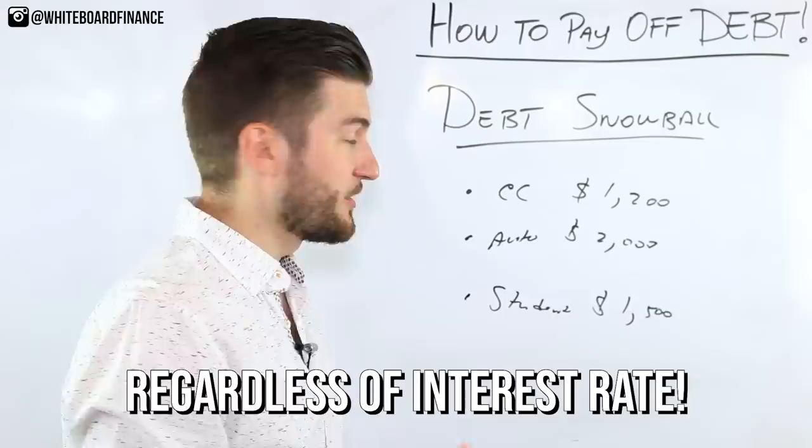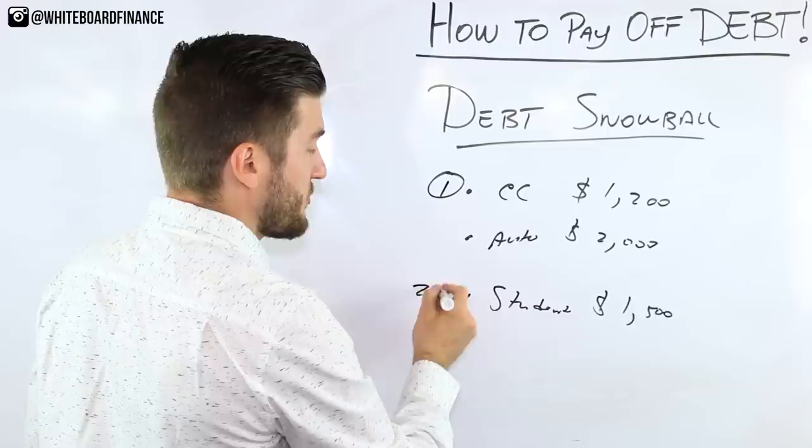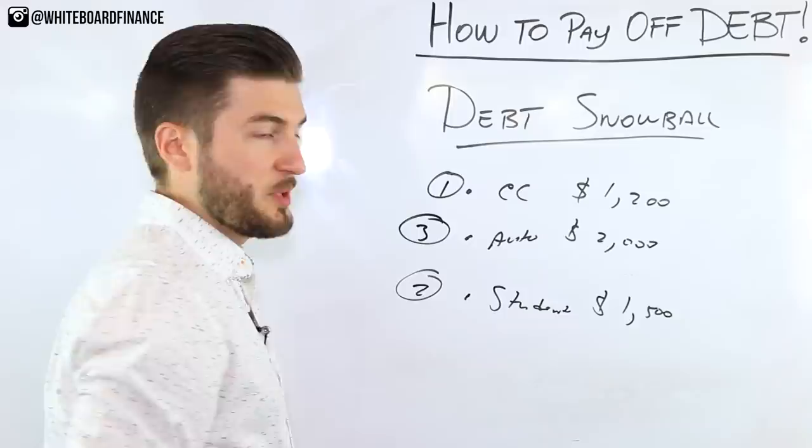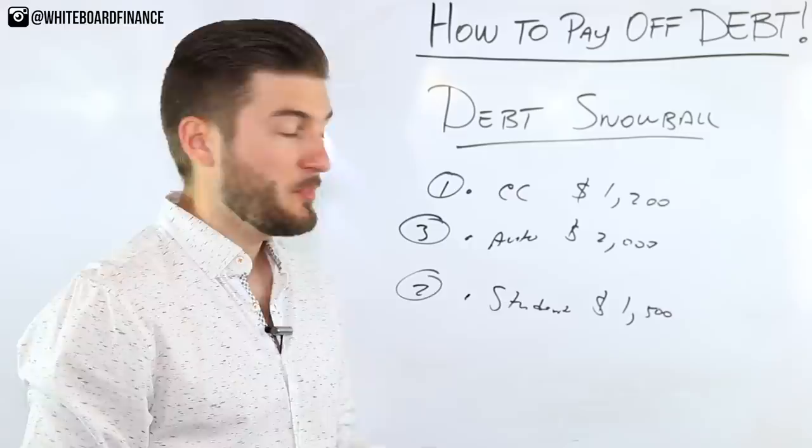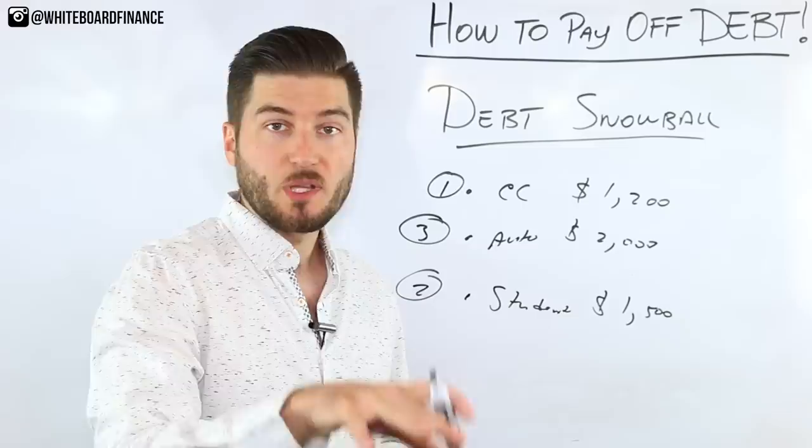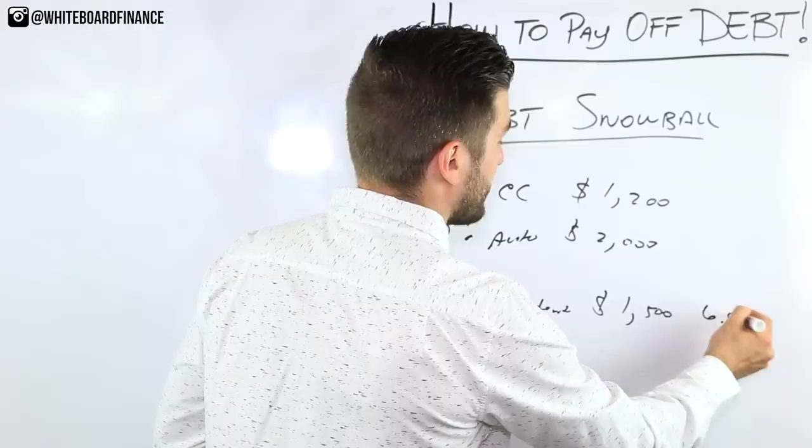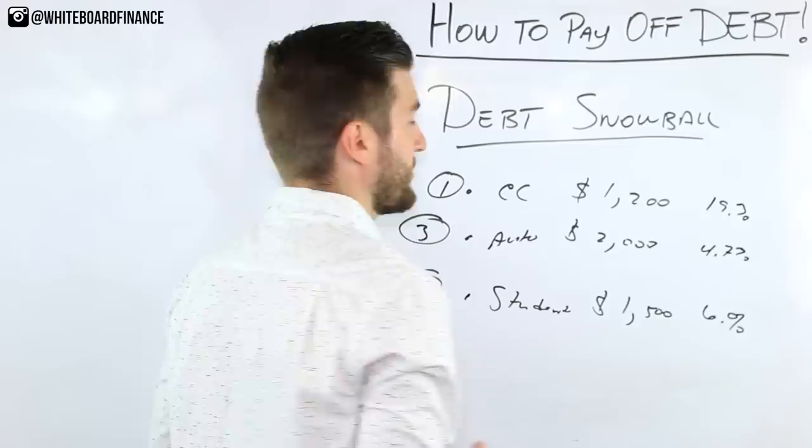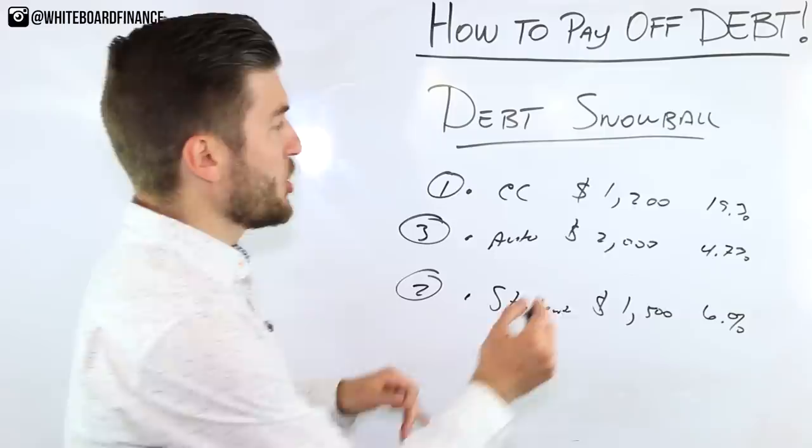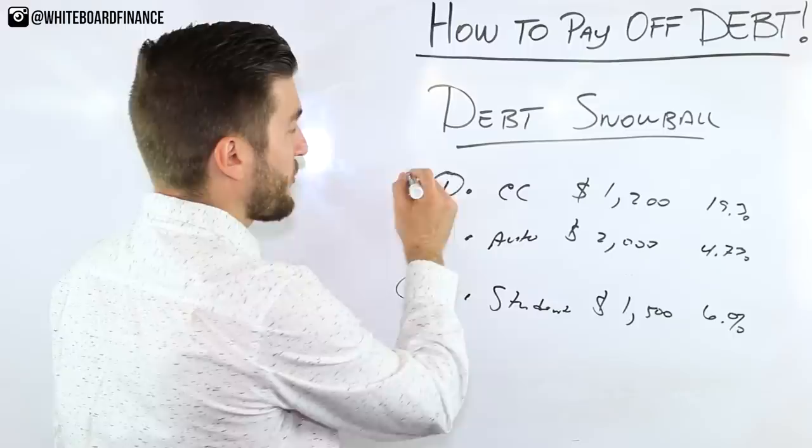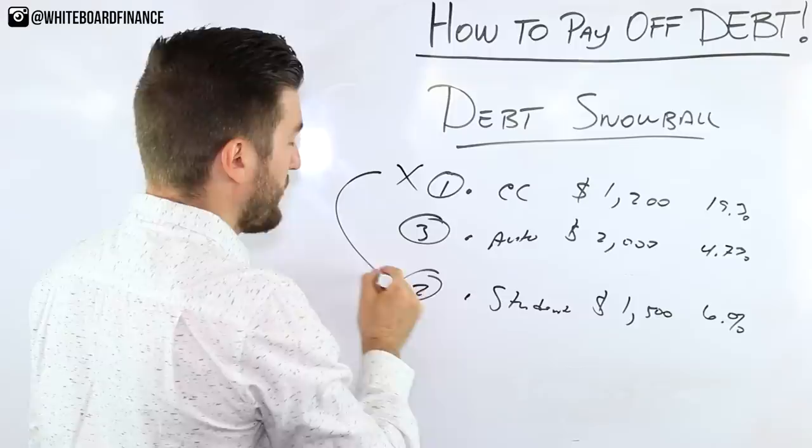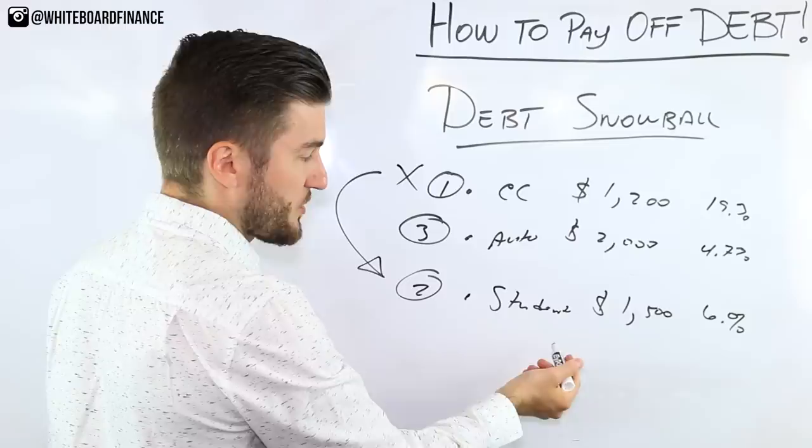So obviously if we're doing that, the credit card would be one, student loans would be two, and the auto loan would be three in the order of payoff. What you're going to do with the debt snowball is knock these out one at a time while making minimum payments on the two higher debts. Let's say the student loan is 6%, the auto loan is 4.7%, and the credit card is 19%. Regardless of the interest rate, you knock this one out as quickly as possible while maintaining minimum payments on these two. Once the credit card is knocked out, you take what you were paying on it and move it all towards whatever is second in line, in this case the student loans.